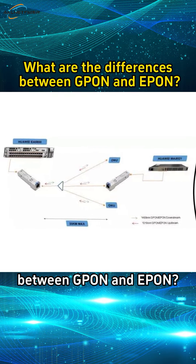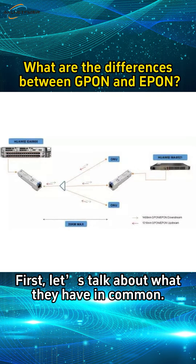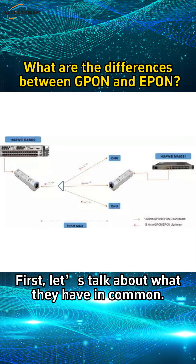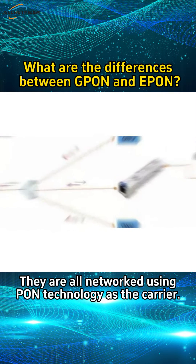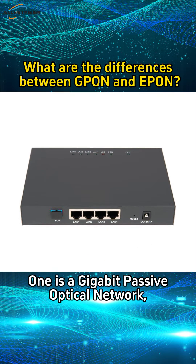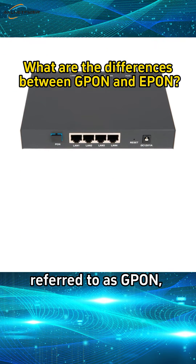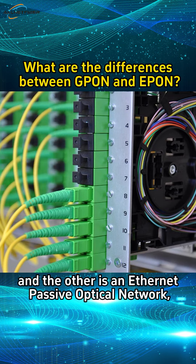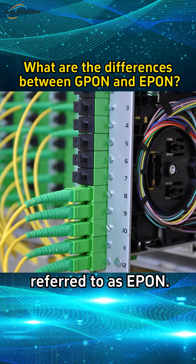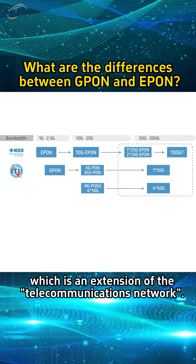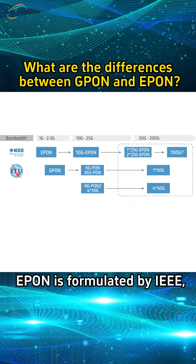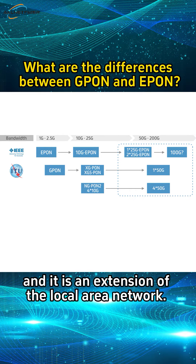What are the differences between GPON and EPON? First, let's talk about what they have in common. They are all networks using PON technology as the carrier. One is a Gigabit Passive Optical Network, referred to as GPON, and the other is an Ethernet Passive Optical Network, referred to as EPON. GPON is formulated by ITU-FSAN, which is an extension of the telecommunications network. EPON is formulated by IEEE, and it is an extension of the local area network.